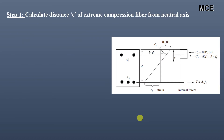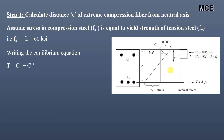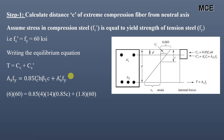First, we will calculate the distance C of the extreme compression fiber from the neutral axis. For this, we will assume that the stress in the compression steel, FS', is equal to the yield strength of tension steel. We will later check this assumption. So first we assume FS' equals FY equals 60 KSI, then we write the equilibrium equation: total tension equals total compression, which consists of compression due to concrete plus compression due to compression steel. Writing the equilibrium equation: AS times FY equals 0.85 times FC' times B times beta1 times C, plus AS' times FY.